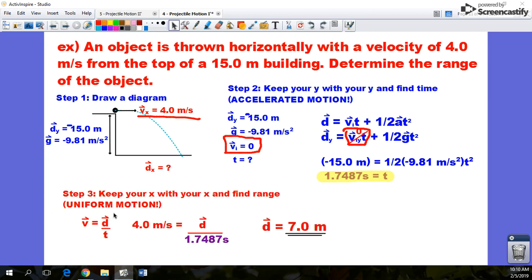Third and final step. Now we think about the x dimension. In the x dimension, there's uniform motion, which means we can just use the uniform motion formula, v equals d over t.